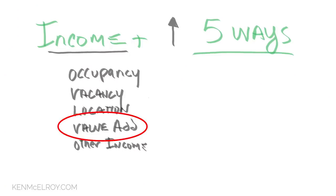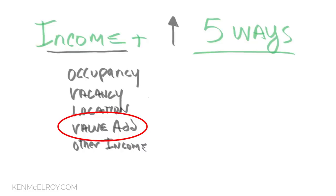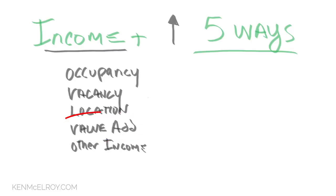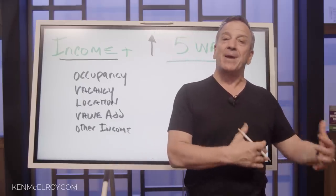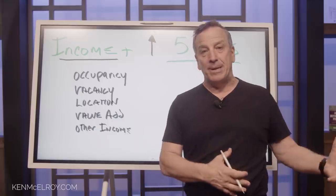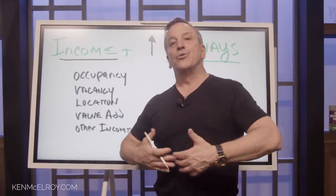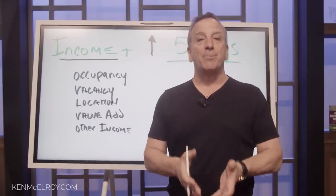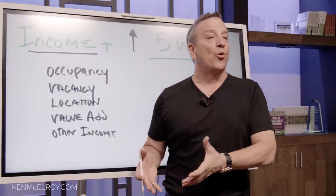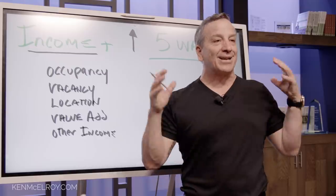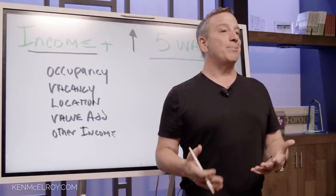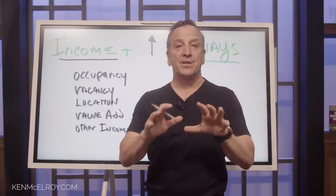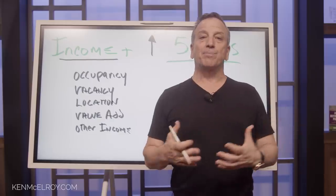The next one is value-added income. We already touched on washers and dryers — we're buying a building right now where we're getting $40 or $50 a month from that. Another thing we started doing is putting in pet areas and fencing areas around individual units so pets can run in and out — we started getting $50 a month just for that. We also started adding storage units on the property, with people paying $50 to $100 a month just for storage.